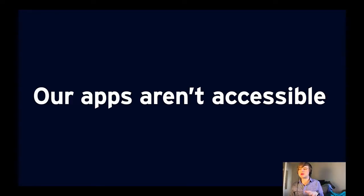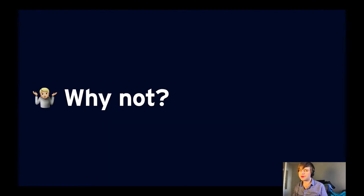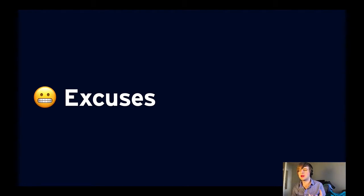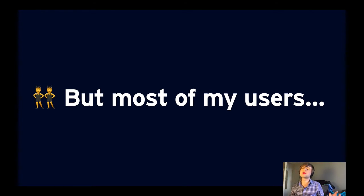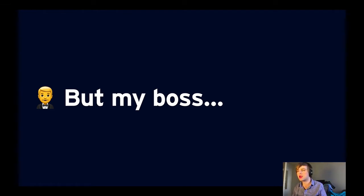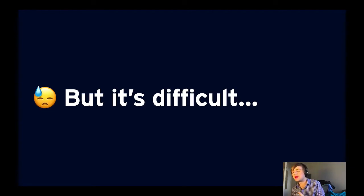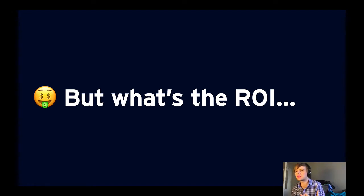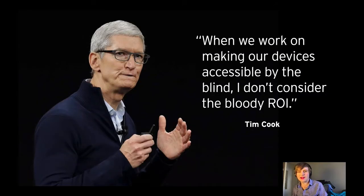Here's the deal: most of our apps aren't accessible, and even the ones that are still have a long way to go. We know that iOS provides some of the best accessibility APIs of any operating system ever released, and yet a staggering number of apps don't respect users with these access needs at all. I think the real reason is that we make excuses — things like 'most of my users don't use these features,' or making excuses about bosses not supporting the work before we've even advocated for it. We make excuses about accessibility being hard, while eagerly implementing the latest dark mode and iPad cursor APIs. And we ask about return on investment, for which Tim Cook probably has the best answer: 'When we work on making our devices accessible by the blind, I don't consider the bloody ROI.'